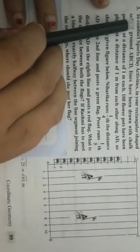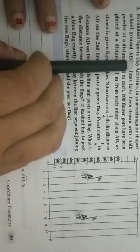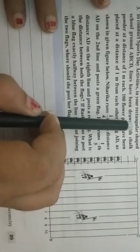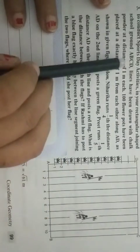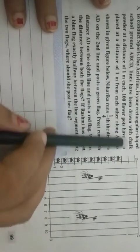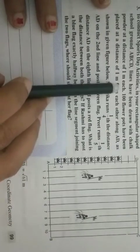Question number 3. To conduct sport day activity in your rectangular shape school ground ABCD, line has to be drawn with chalk powder at the distance 1 meter each.